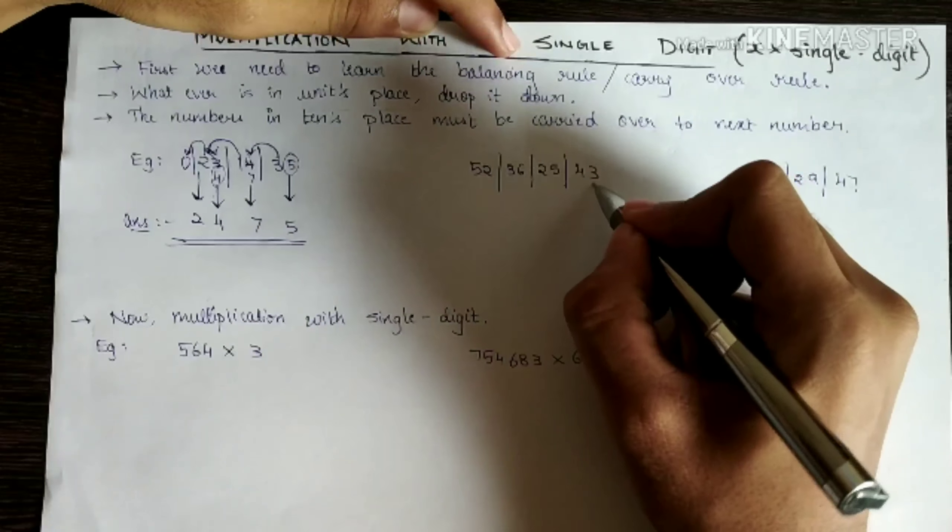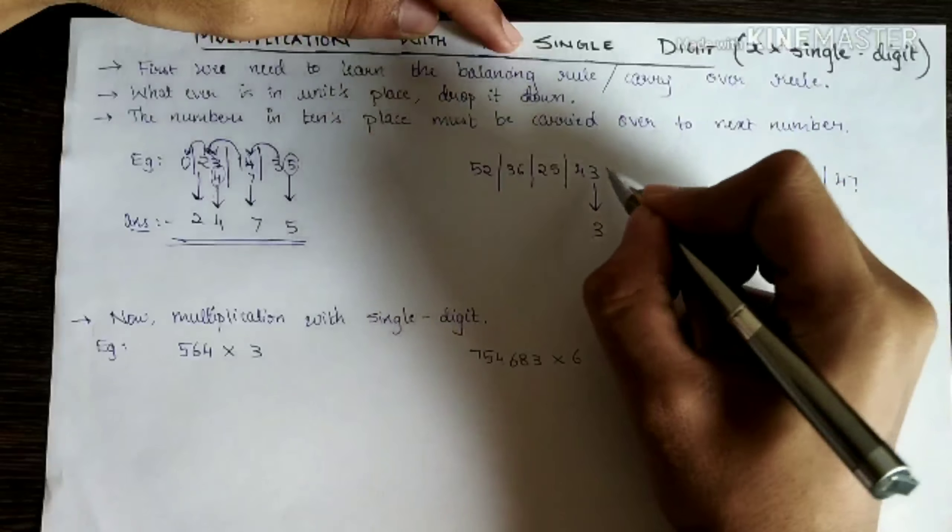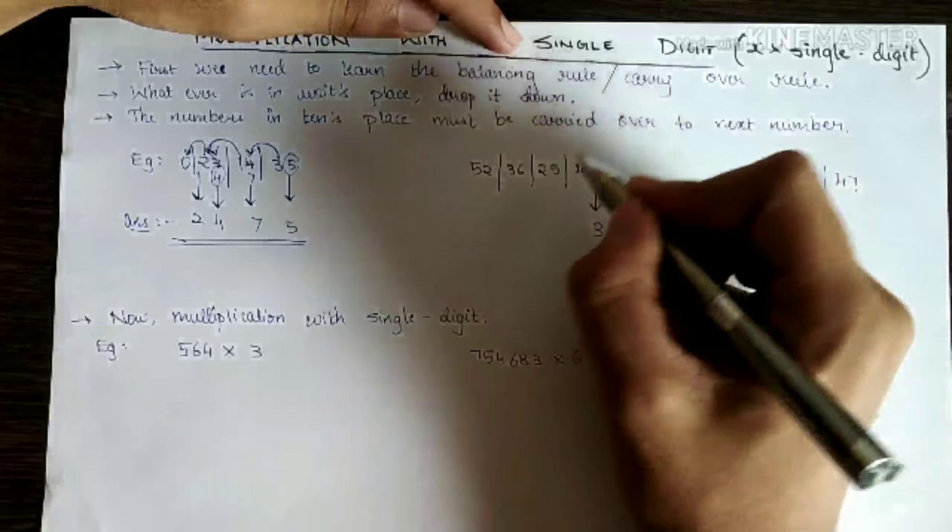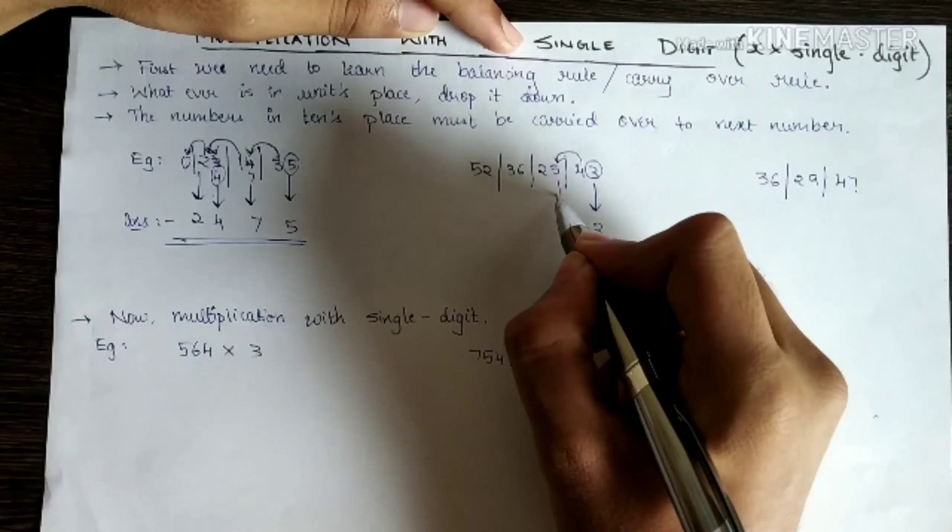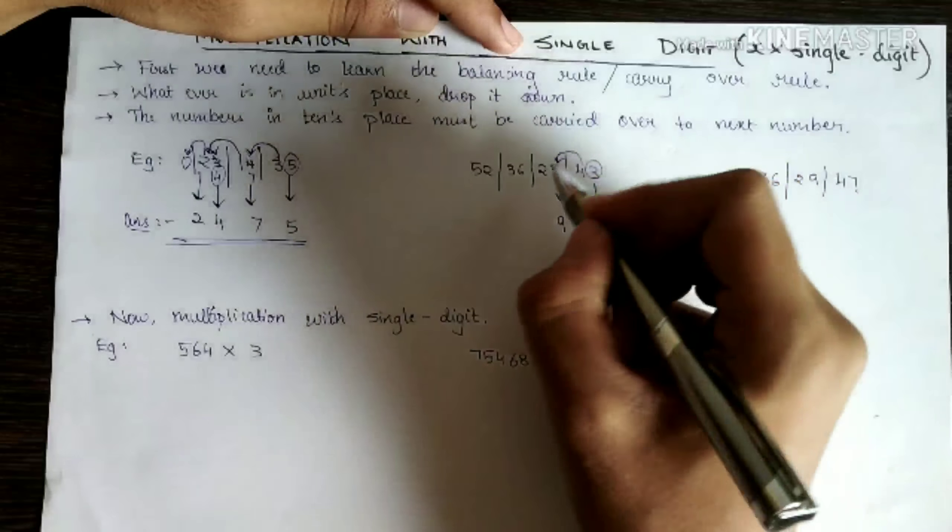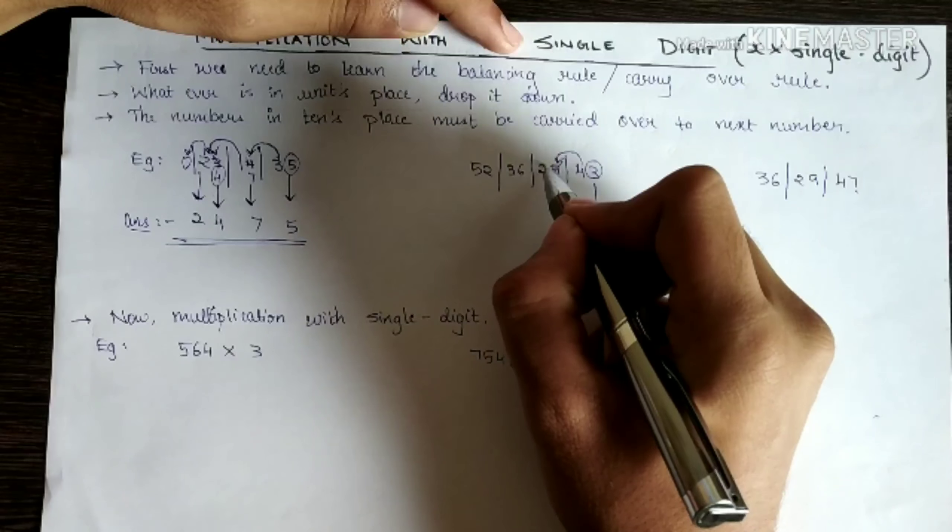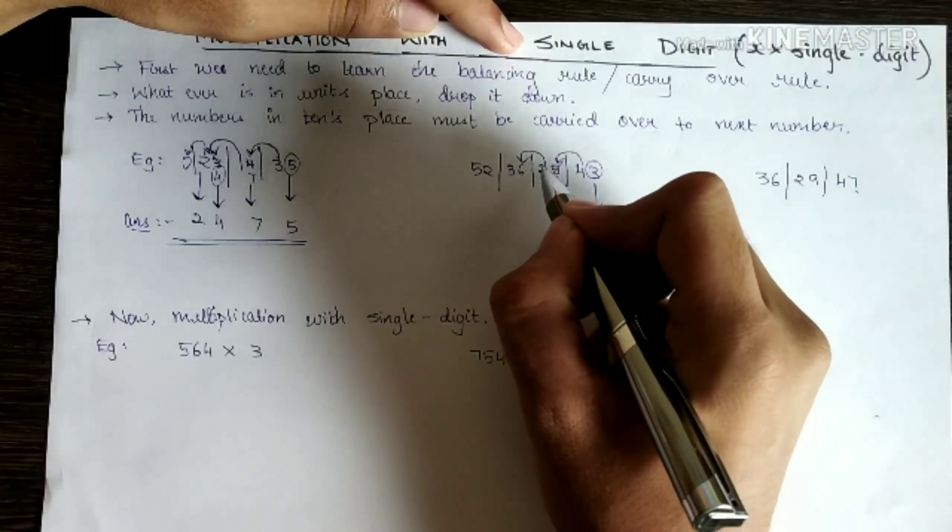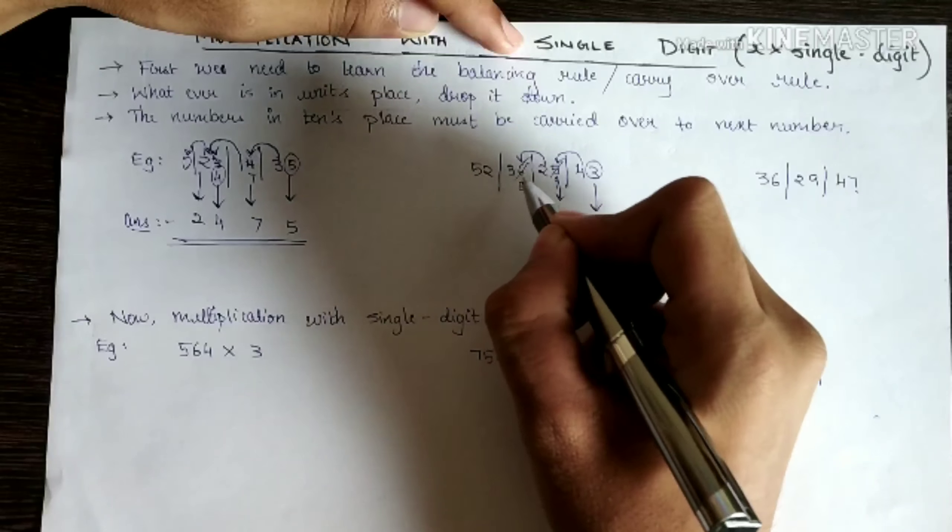Now the next question. It says three. Three we should drop it down because it is in units place. Four plus five is nine. So drop nine because this becomes nine. Two is in tens place. Add it to the next one. Six plus two is eight. It becomes eight.